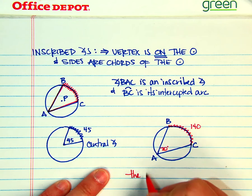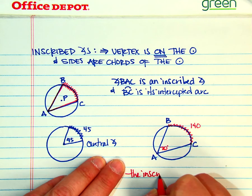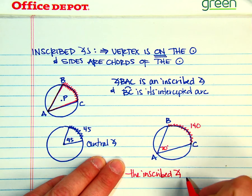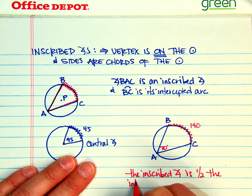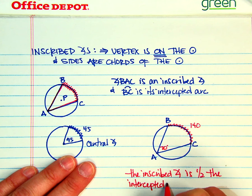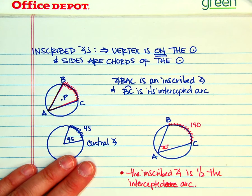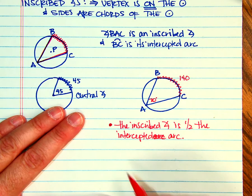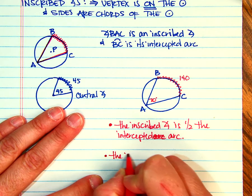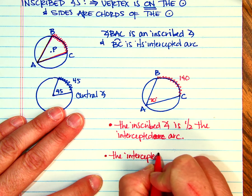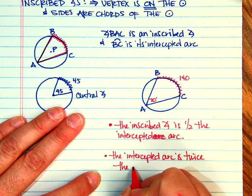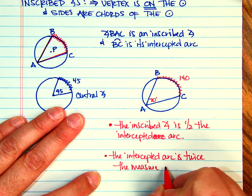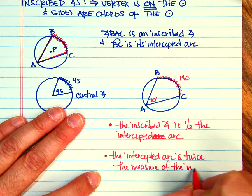So the inscribed angle is half the intercepted arc, or if you go backwards with that idea, you would say that the intercepted arc is twice the measure of the inscribed angle.